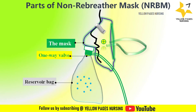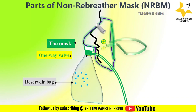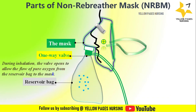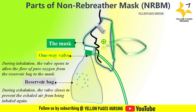The one-way valve between the mask and reservoir bag is also called the inspiratory valve. During inhalation, the valve opens to allow the flow of pure oxygen from the reservoir bag to the mask. During exhalation, the valve closes to prevent the exhaled air from being inhaled again. This ensures that only oxygen-rich air moves from the reservoir bag to the mask during each breath.